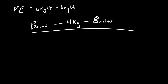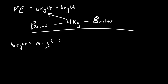So what is the potential energy of a piece of bacon that has a mass of four kilograms and is eight meters off the ground? Well, of course this is mass, not weight, and we need to convert mass to weight. Let's figure out how to calculate the weight of an object using only its mass. The weight of an object is equal to the mass of the object times the force of gravity. So weight equals mass times gravity, aka mass times 9.8 meters per second squared.